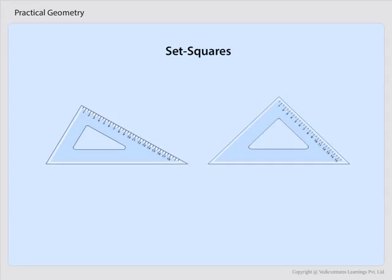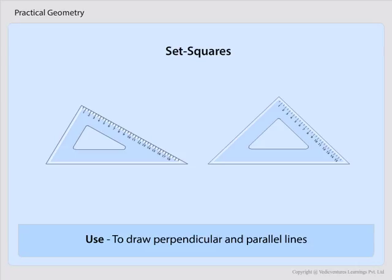Set squares. Two triangular pieces. One of them has 45 degree, 45 degree, 90 degree angles at the vertices. And the other has 30 degree, 60 degree, 90 degree angles at the vertices. Used to draw perpendicular and parallel lines.